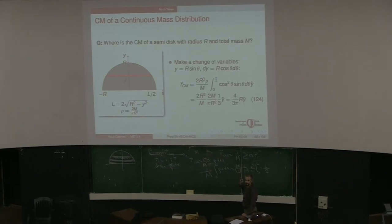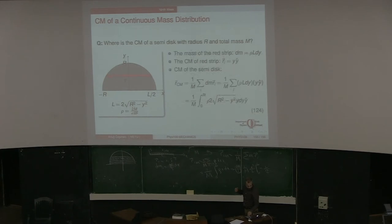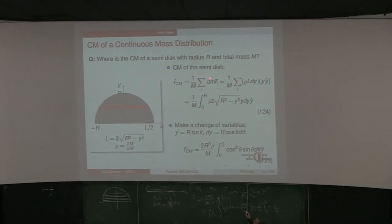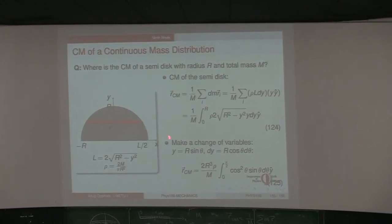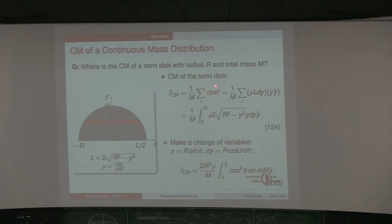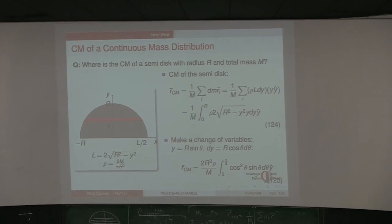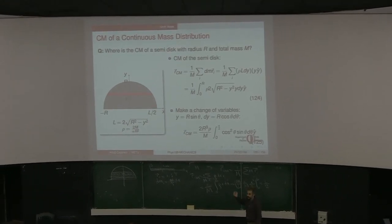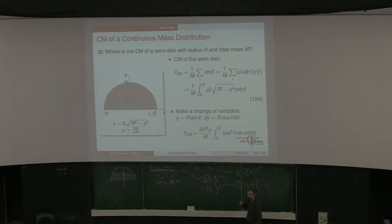Any questions on how to calculate the center of mass? The main idea is: divide whatever system you have into very small parts, calculate the mass of each part, calculate the center of mass of each part, form the sum, which becomes an integral. Once you know the center of mass, just to study the translational motion of the object as a whole, it's enough to follow the position of the center of mass only — you can ignore its rotational motion for now. Next week we will see how rotational motion affects motion in general.